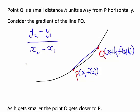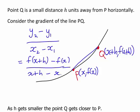...the gradient of this line between those two points will be the y coordinate, f(x+h), minus the y coordinate here, f(x), divided by the x coordinate, x plus h, minus the x coordinate of P, that I've just called x here.